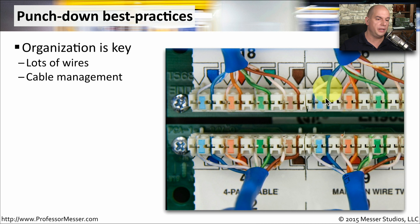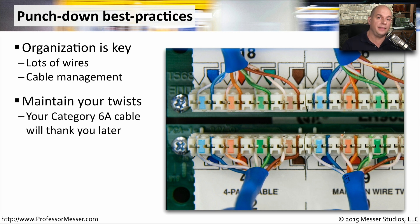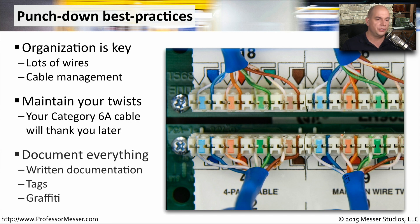Here's a 110 block punchdown. You can see that organizing these wires together is very important — you need to know exactly where you're connecting these wires and where that cable is leading. You also want to make sure you maintain the twist when you're punching it down into the block. You can see here this person did a very good job of maintaining the twist all the way up until the very last point where it had to make the connection to the punchdown block. There are so many different wires and connections when you're working with these punchdown blocks that you want to be sure to follow best practices for documentation. Make sure you write down all of the different connections and where they're going, tag certain cables and label them, or write directly on the board used to mount all of these punchdown blocks.